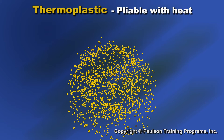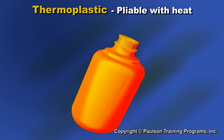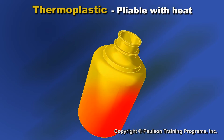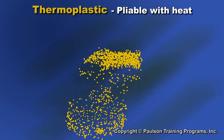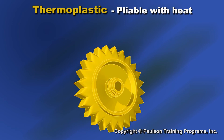First, thermoplastic. Thermoplastic means pliable with heat. Each time a thermoplastic is heated, the polymer molecules can be made to flow, and the plastic can be formed into a new shape. This new shape could then be heated again to form a different shape. That's a thermoplastic. Most injection molding is done using thermoplastics.